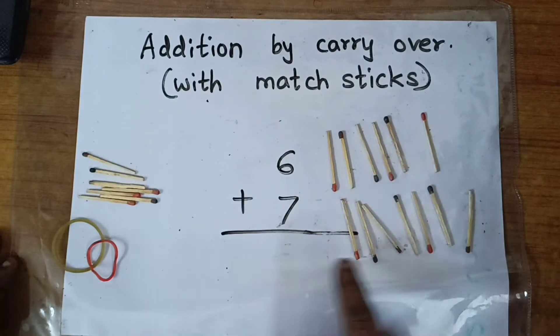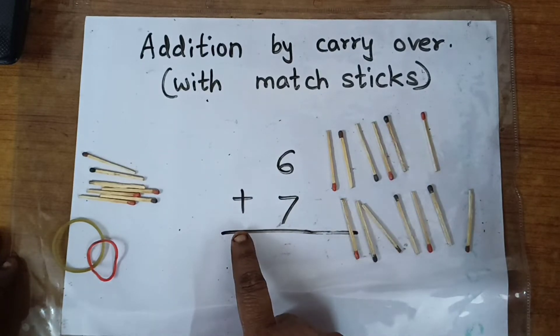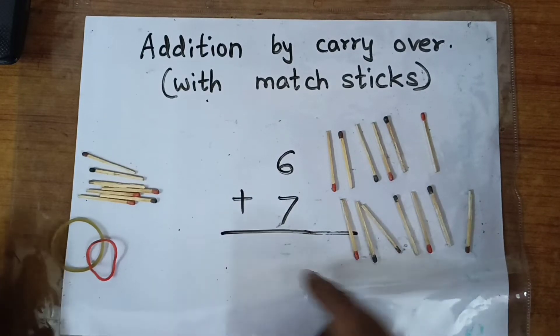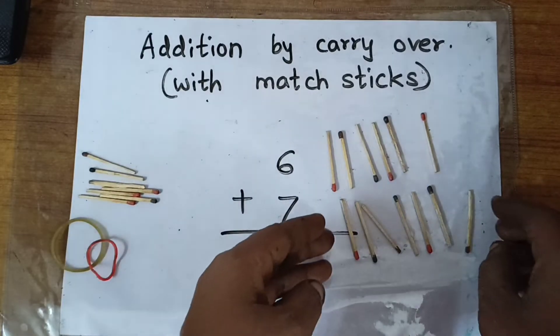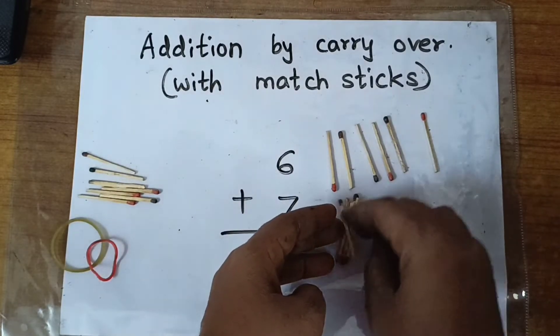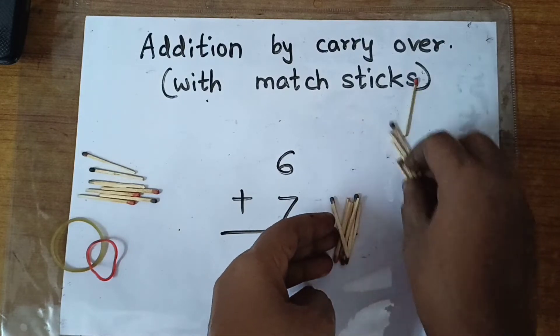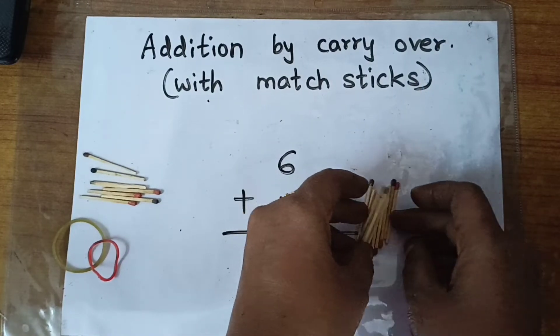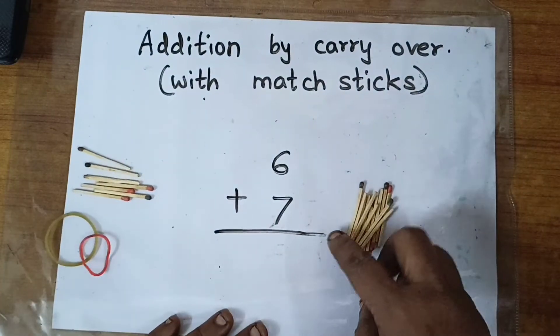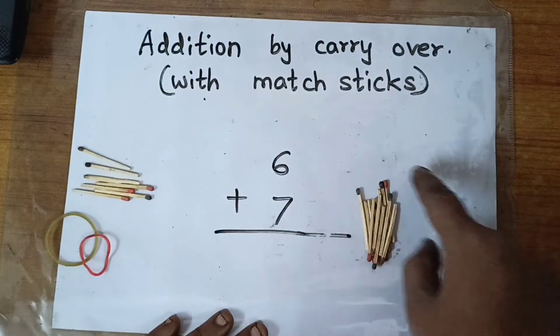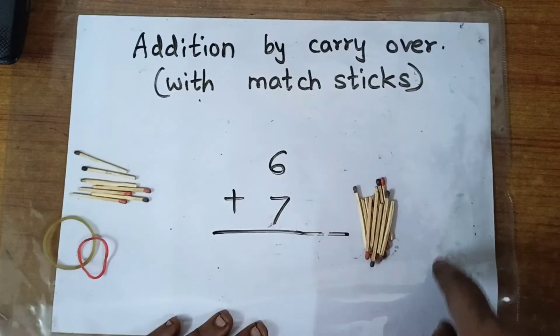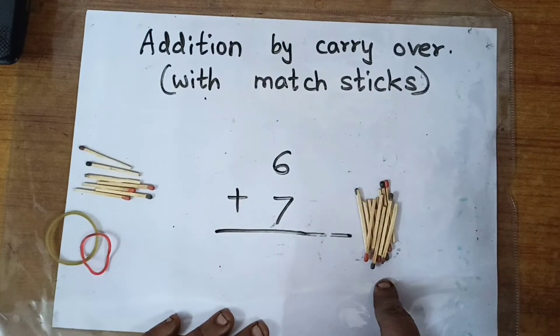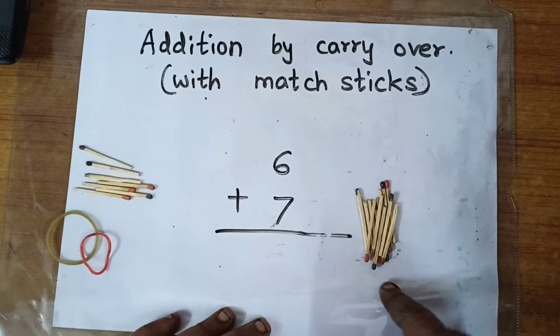6 plus 7. Now because it is addition, I will put them together. These sticks and these sticks I will put them together. Now, what is the total number of sticks? This is our answer.